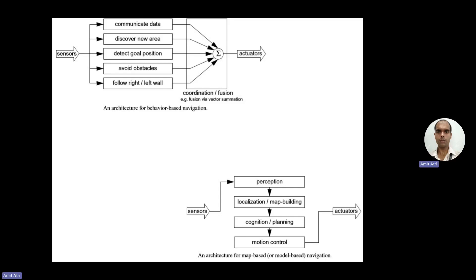In the behavior-based approach, no map is built; the robot only follows some pattern or wall — either the left wall or the right wall. This technique does not include building any type of map, so the complexity level is also less. All of the sensor data is fused and sent to the actuators to take the required action. The lower diagram shows map-based navigation.